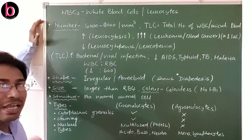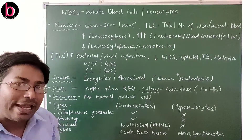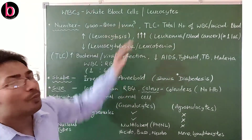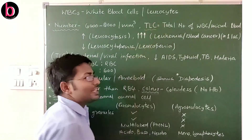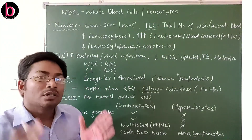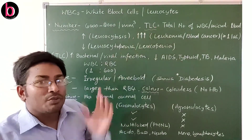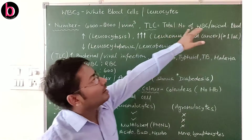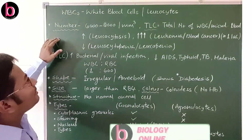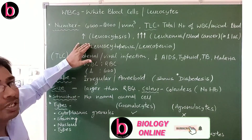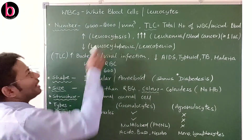First, when we discuss about the number, their number is 6000 to 8000 per cubic millimeter in blood. There is a term TLC — this is the total leukocyte count, which is the total number of leukocytes present in blood per microliter.